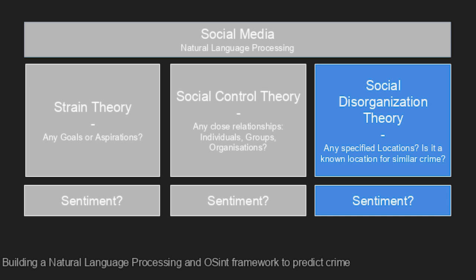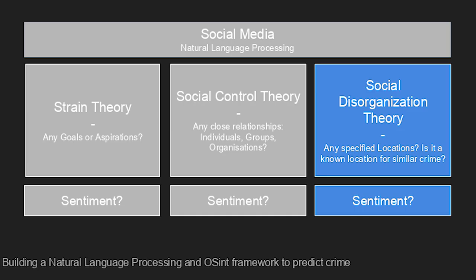Next, we take that same text and ask: does it contain reference to any close relationships, any individuals, groups, or organizations? And if so, what is the sentiment? And then finally, we look at: does the text contain reference to the individual's location? If so, is it a location known for this type of crime? And then, what is the sentiment?